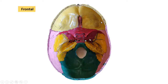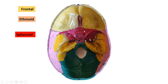First, on the anterior side, the bone we have is the frontal bone — the yellow color bone. Next bone we have is the ethmoid bone. This is the ethmoid bone in the center of the anterior cranial fossa. The next red color bone you are seeing is the sphenoid bone.